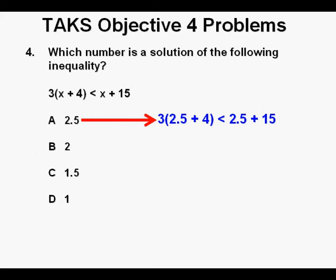So we try out the answers. For answer A, we have 3 times quantity 2.5 plus 4 is less than 2.5 plus 15. And that simplifies to 3 times 6.5 is less than 17.5. And that becomes 19.5 is less than 17.5.